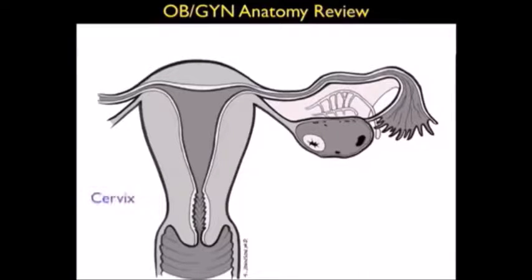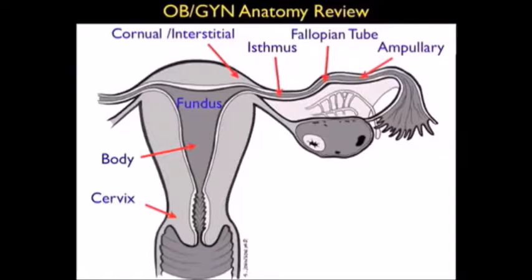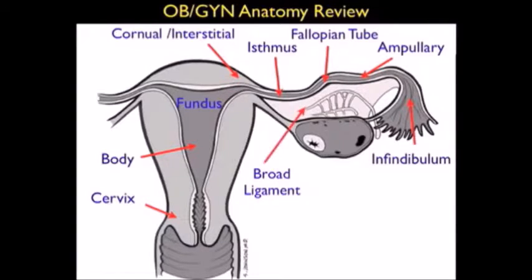Before launching into the sonographic findings of a normal intrauterine pregnancy, let's quickly review the OBGYN anatomy important for this application. We see the uterus to the left and adnexa to the right. Notice the areas of the uterus: the lower cervix, the intermediate body, and the fundal region towards the top — where we define an intrauterine pregnancy to be located. We see the interstitial region where the fallopian tube enters the uterus, and the corneal region in a bicornate uterus, where some variants of ectopics can implant. The broad ligament encases the fallopian tube and ovary.